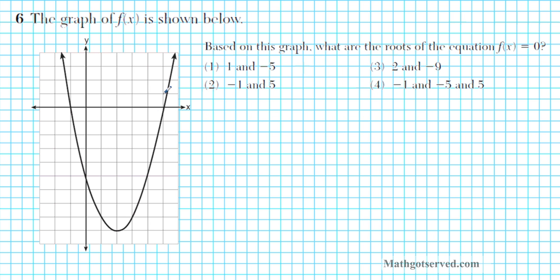We have the graph here. The expectation is for us to use the graph to find the roots of this function. First thing we're going to do, let's go ahead and label the axis — this is our x and y axis. Let's calibrate it: 1, 2, 3, 4, 5, and negative 1. The roots are the x-intercepts.